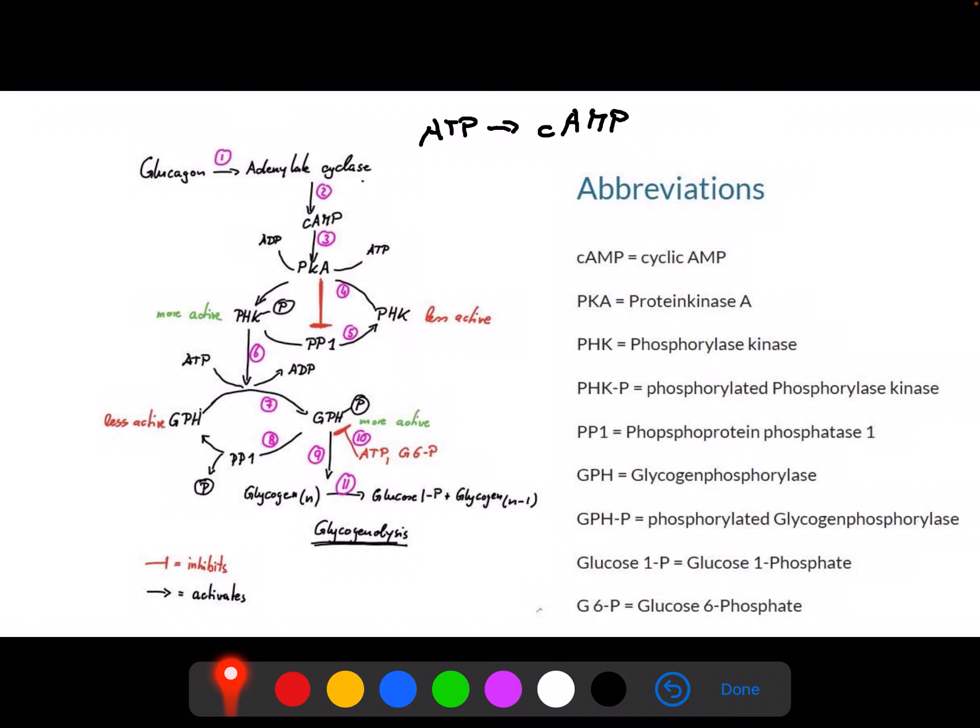Usually phosphorylase kinase is in a less active form, but if it gets phosphorylated by PKA, indicated here with this phosphor group, we get a more active form of this phosphorylase kinase. We can then set back the active and convert the active phosphorylase kinase through a process of dephosphorylation, which is carried out by phosphatase PP1, phosphoprotein phosphatase 1. This resets the active phosphorylase kinase and converts it back into the less active form.